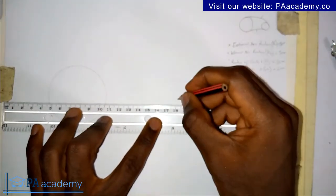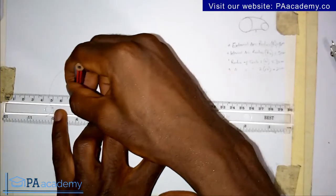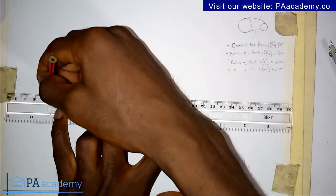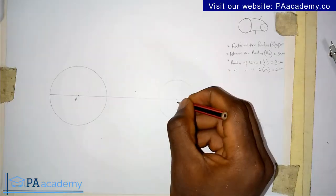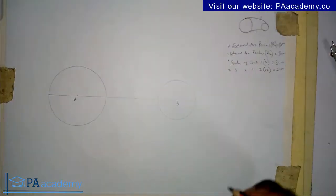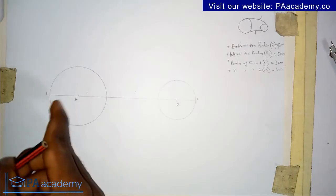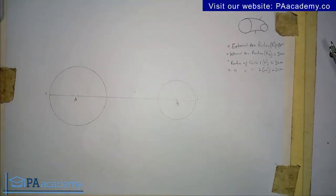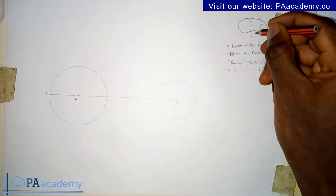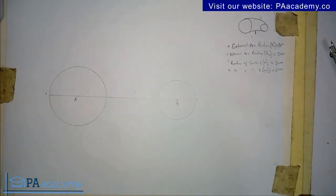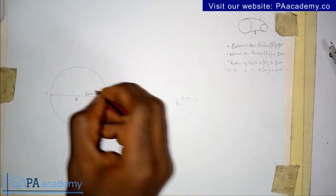The next thing is to join the centers of the two circles by drawing a line across them. Let me label the center of the first circle as point A — with radius r1 of 3 cm — and the center of the second circle as point B — with radius r2 of 2 cm. Now we are ready to draw the internal arc.